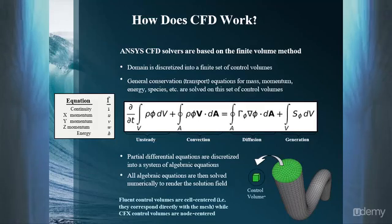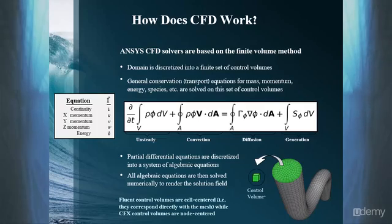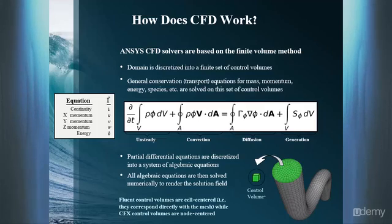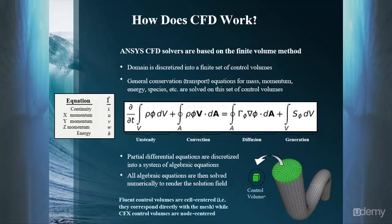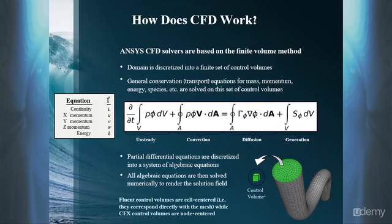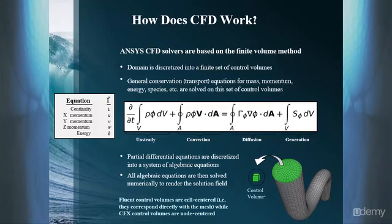In the equation, if you take phi and replace it with the corresponding quantity from the table here, then you have either the continuity, momentum, or energy equations. These are partial differential equations, but after they're discretized, they become a system of algebraic equations where the solution for a given cell depends also on the solution in its neighboring cells. In reality, it's a bit more complicated than that because the equations are nonlinear, but that's the basic idea.